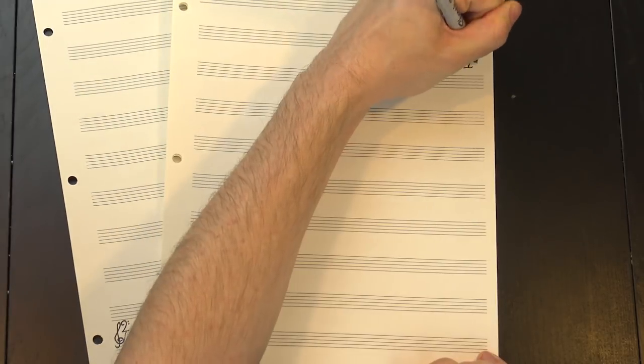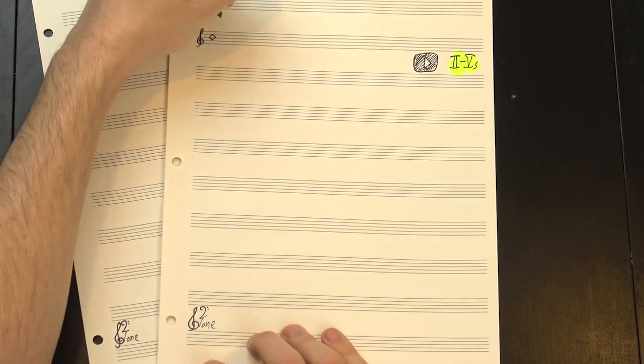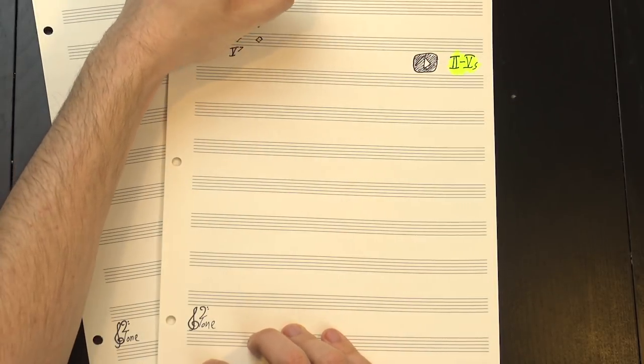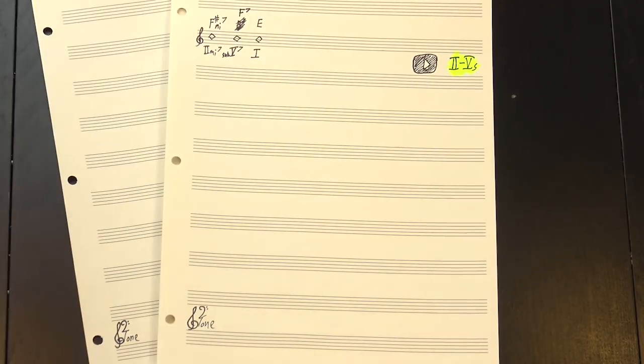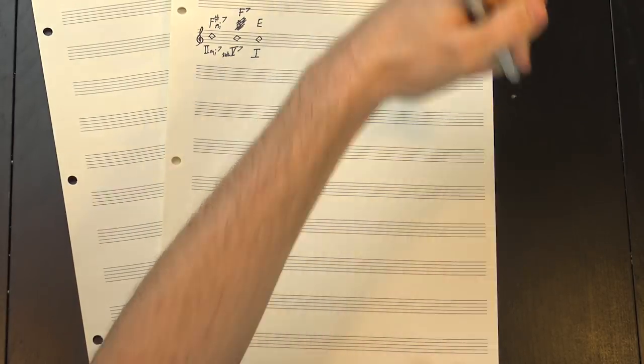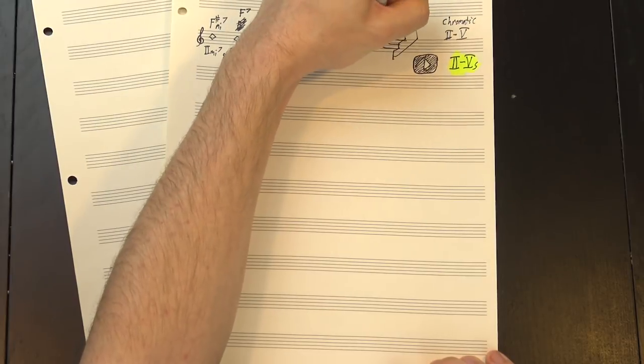You can even combine them with 2-5s, which we talked about in our last video. A normal 2-5 resolution sounds like this, but if you swap in the tritone sub, you get what's known as a chromatic 2-5.